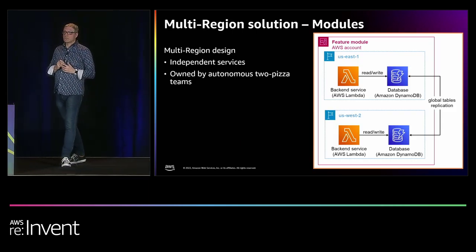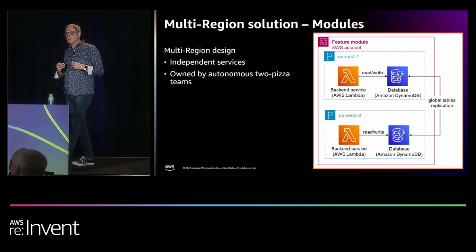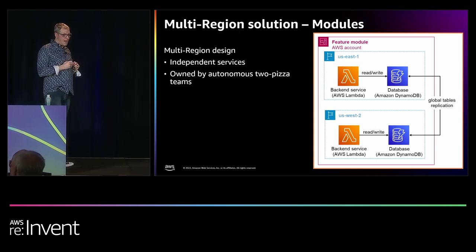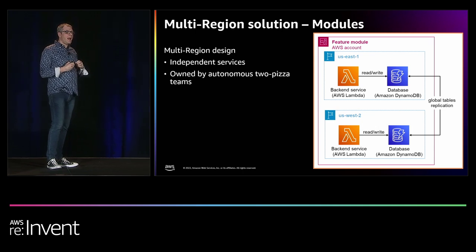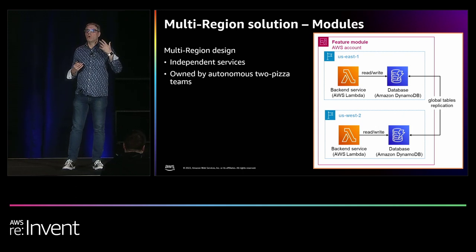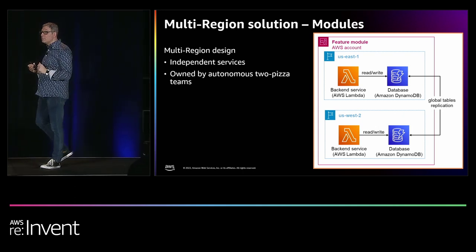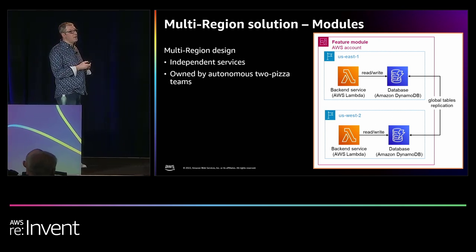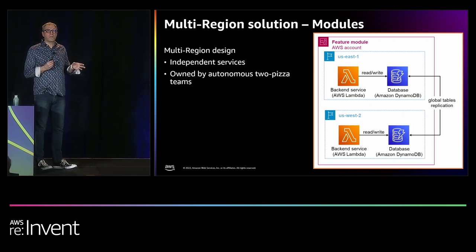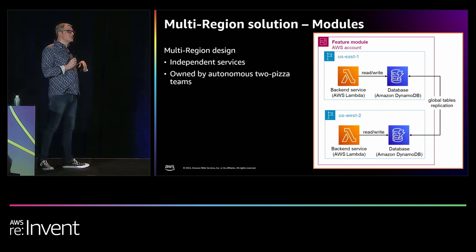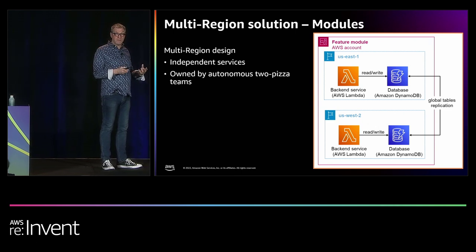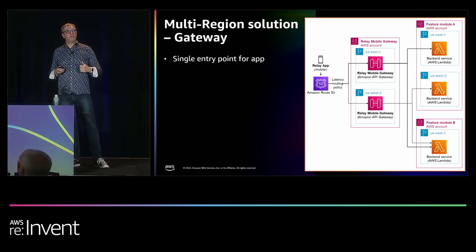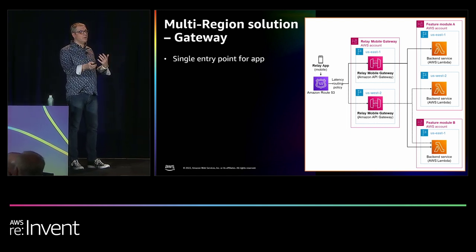The solution: the back-end modules all were fronted by Lambda to integrate with API Gateway, and all persisted important shared data in DynamoDB. They deployed to US-East-1 and US-West-2. DynamoDB has something called Global Tables — you can deploy a table in multiple regions and write to any of them, and those writes are replicated to the other regions, making it an easy solution. Each module is owned by a two-pizza team, and based on criticality analysis, each team decided whether to go multi-region or not. Not all of them did. The gateway was also deployed to two regions, with Route 53 in front — this is called an active-active architecture where each of the two regions actively receives requests.